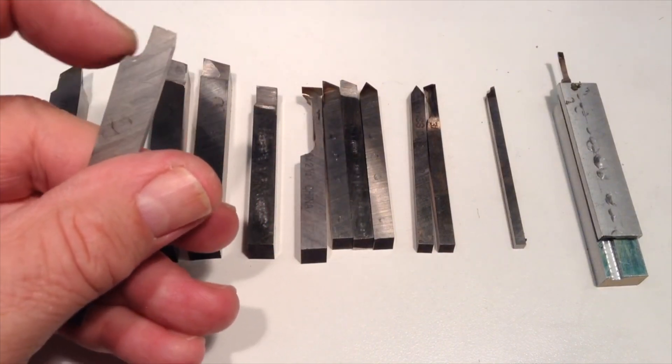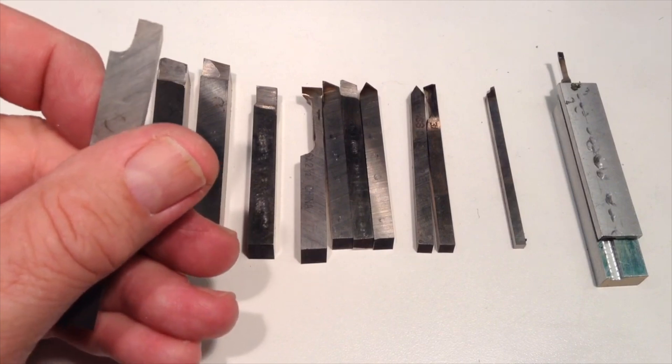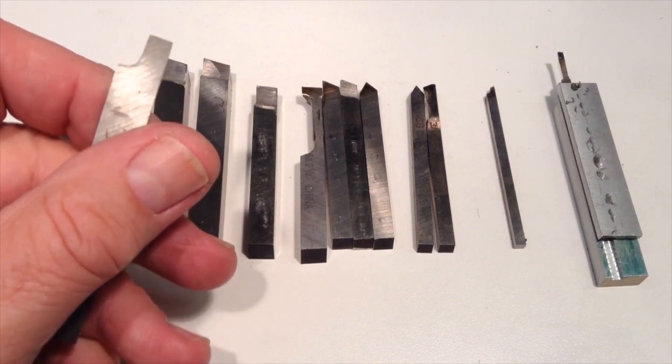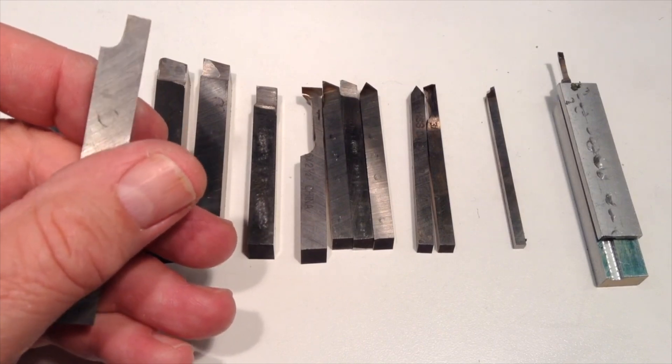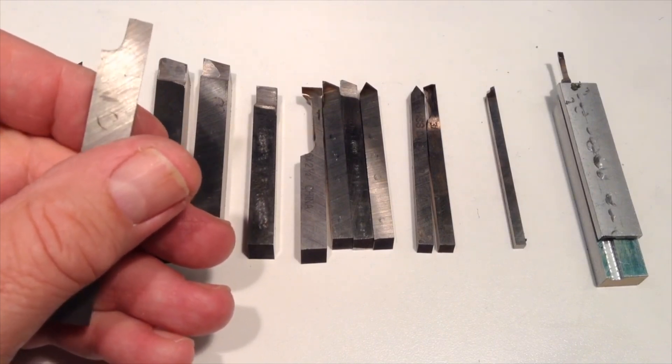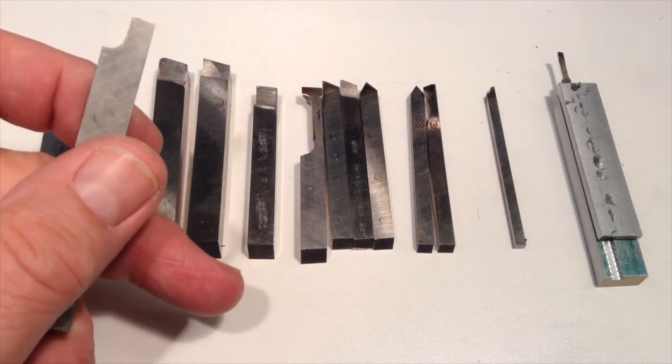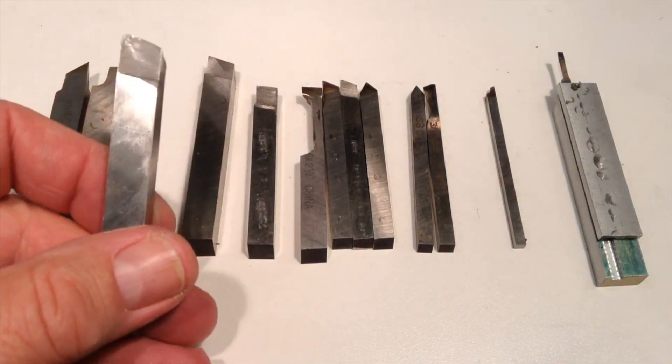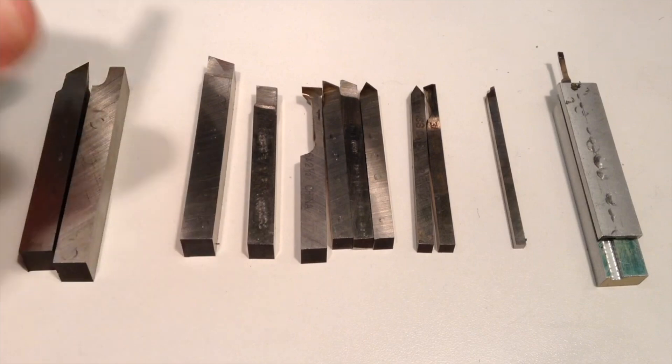This is a shape you can see it's carved out here, and this is an example of what's called a form tool, where the contour on the tool is the opposite or the inverse of the shape that I wanted on the edge of the workpiece. You can see these are machined or ground to different shapes for different purposes.